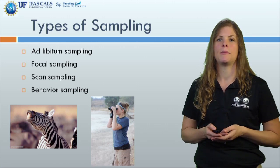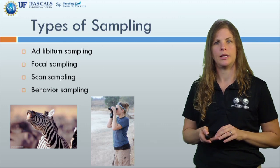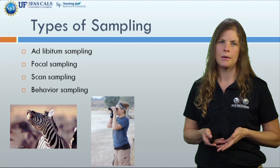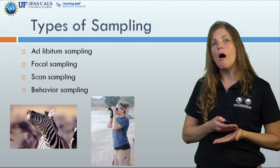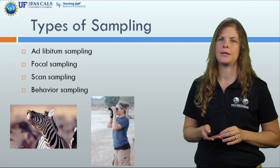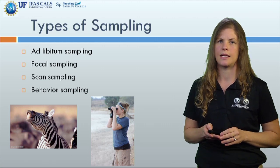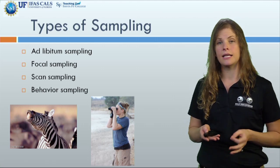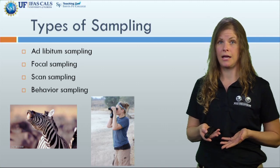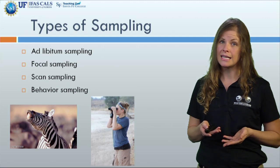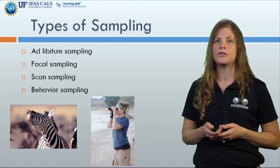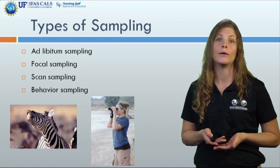The second sampling technique is focal sampling, which focuses on one animal for a specific amount of time while recording all instances of that animal's behavior. The third sampling technique is called scan sampling, and this technique is especially important for those of you participating as citizen scientists on the website, because it's the type of sampling you will be using when observing animals with our wildlife cameras.